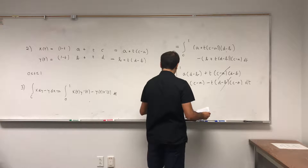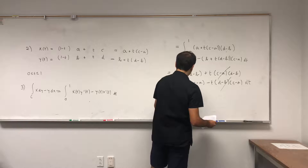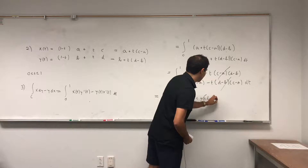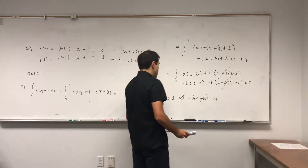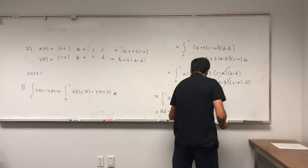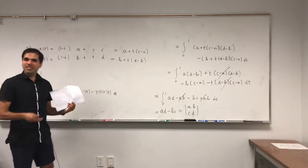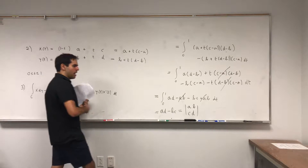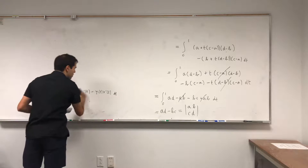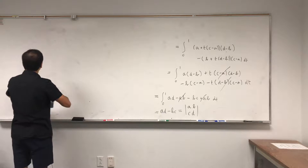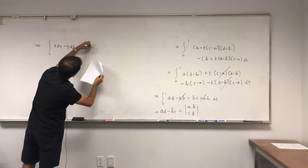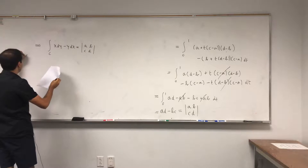You're left with the integral from 0 to 1 of a(d − b) minus b(c − a) dt, which simplifies further — the ab terms cancel — and you're just left with ad minus bc. That's the integral from 0 to 1 of (ad − bc) dt = ad − bc, which is exactly the determinant of the matrix [a, b; c, d]. The line integral of x dy minus y dx along a straight line from (a, b) to (c, d) is just that determinant!